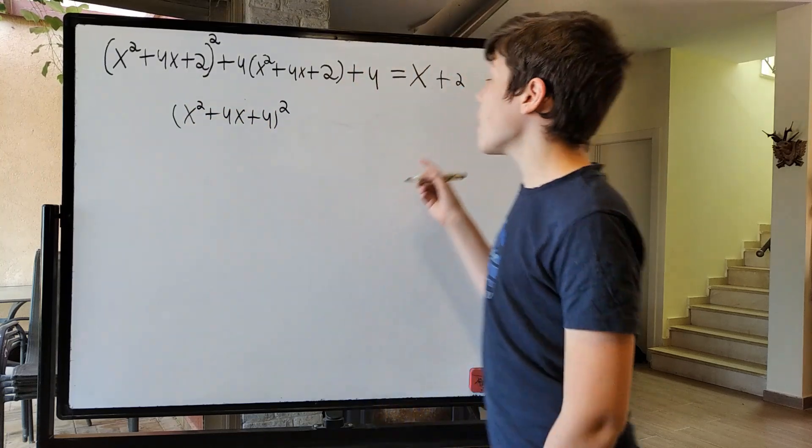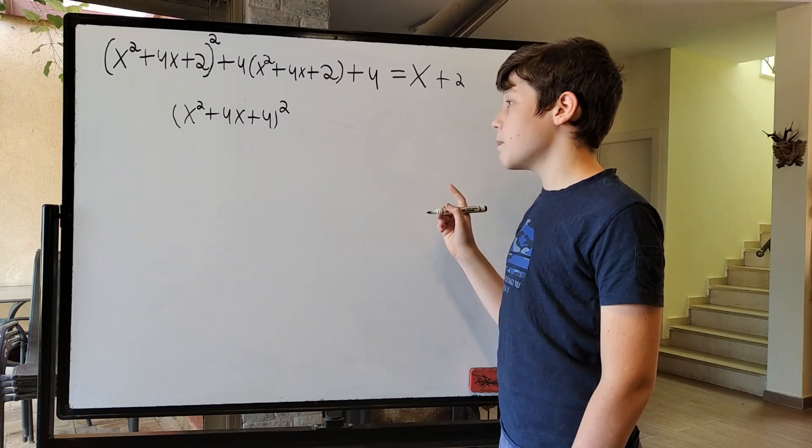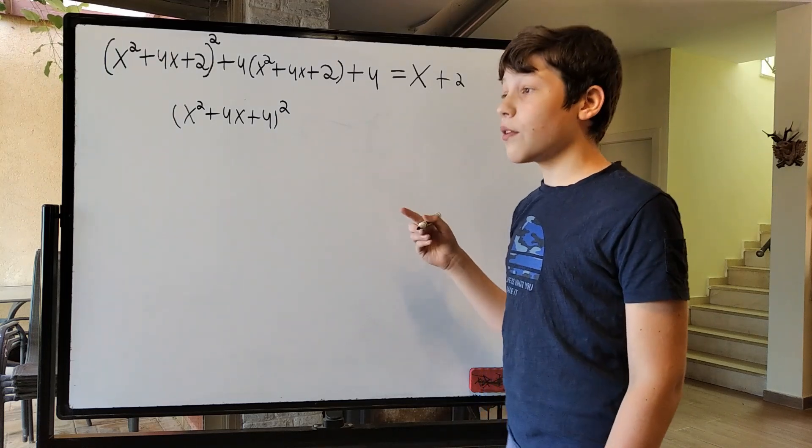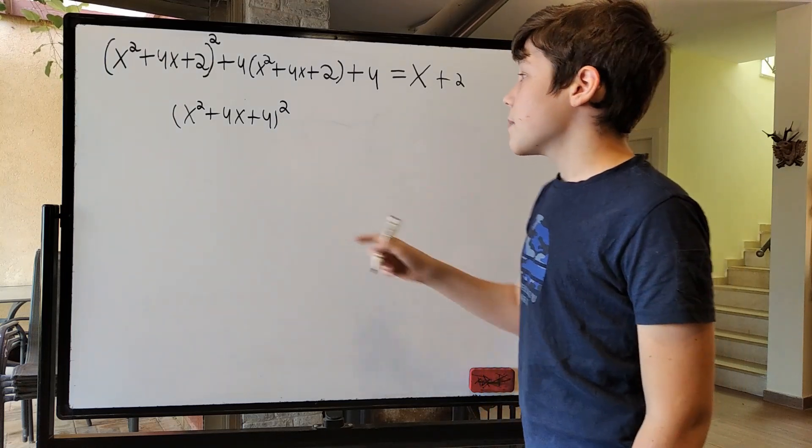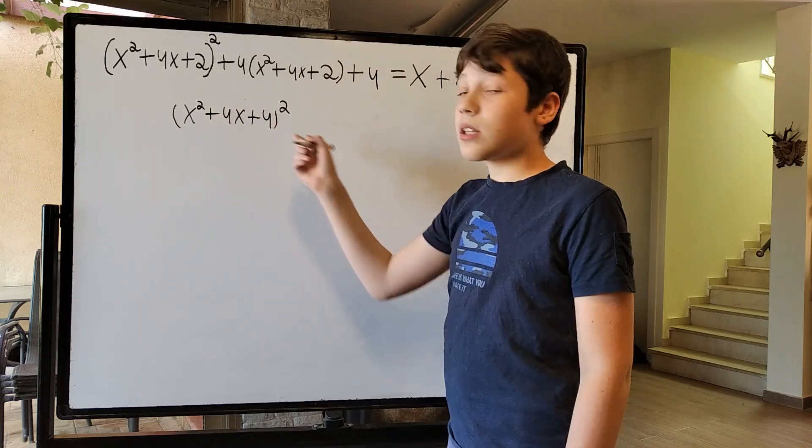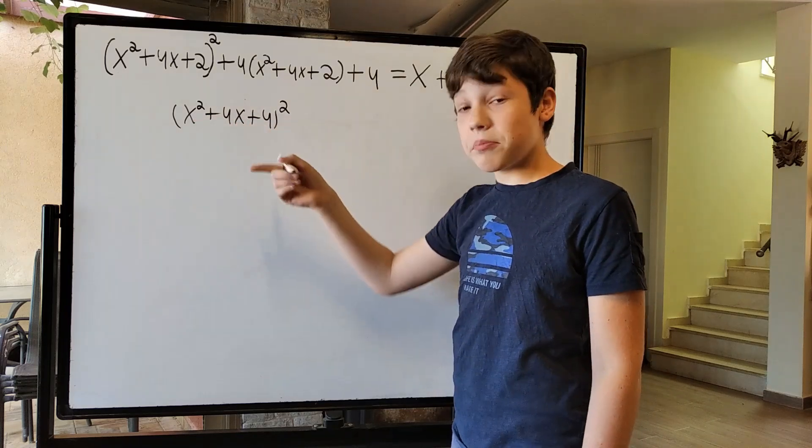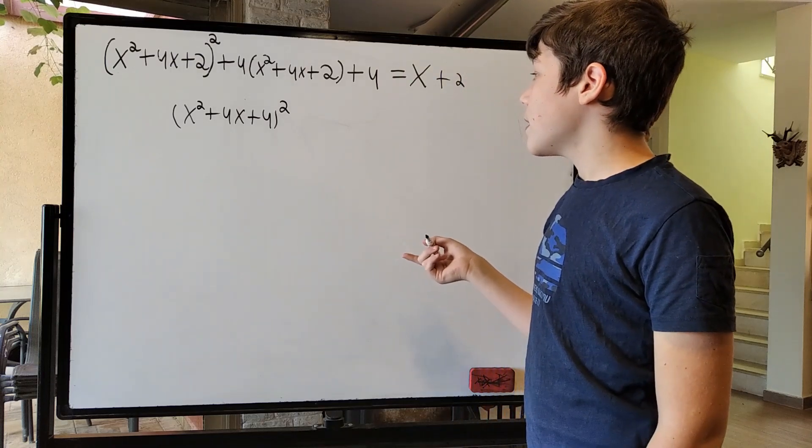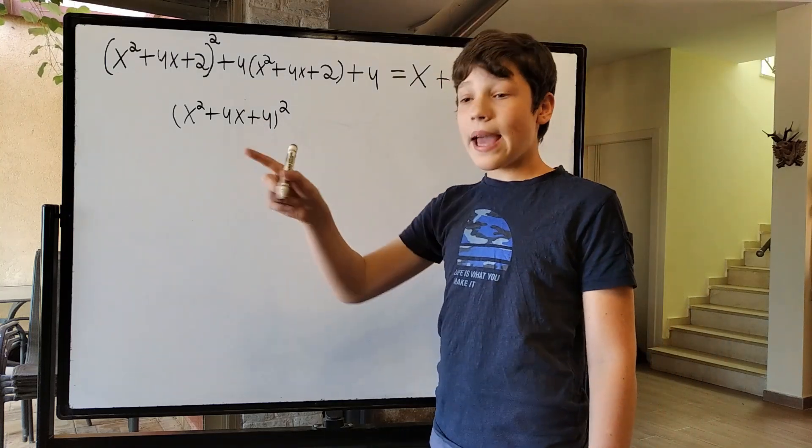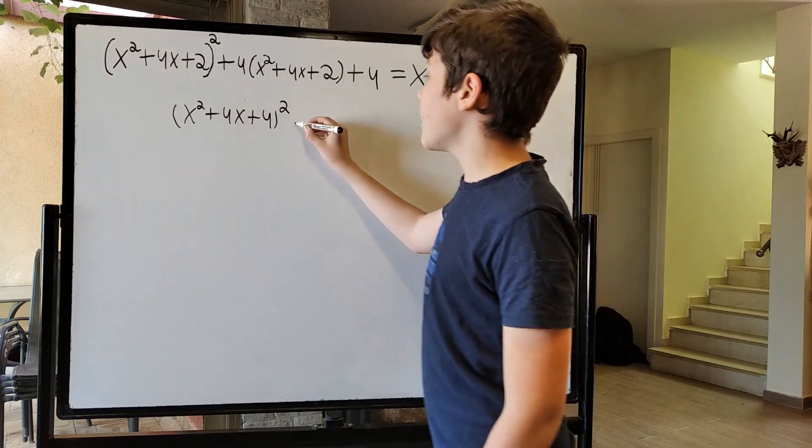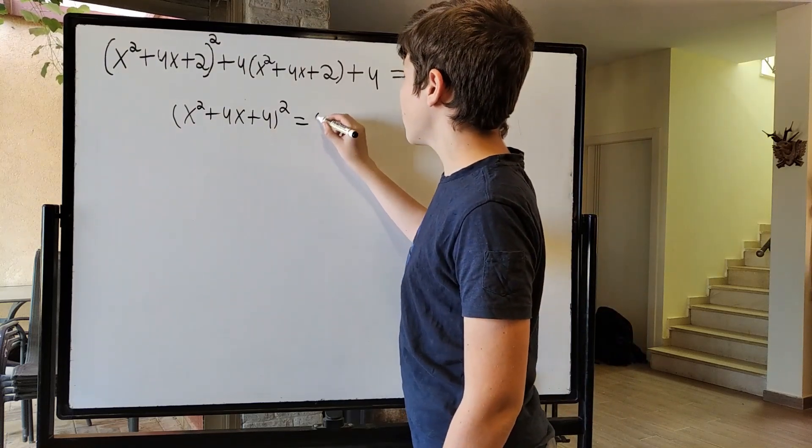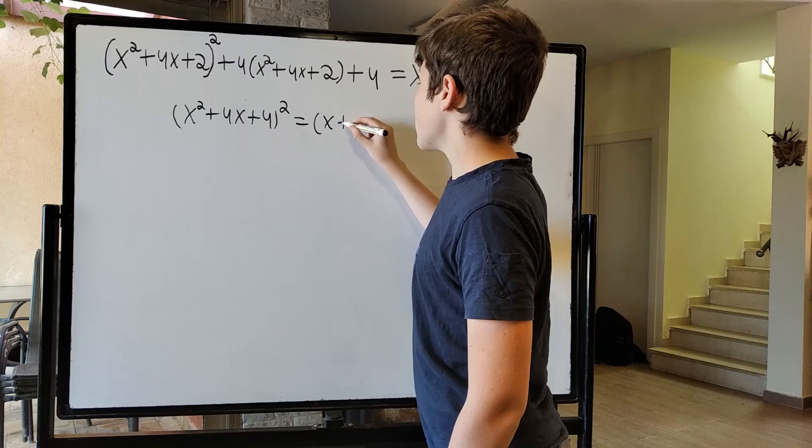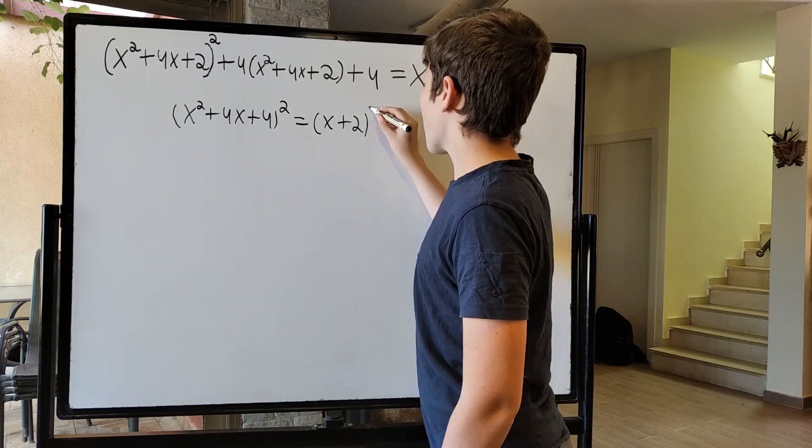But now, before I write that this is x plus 2, you can see that we can further simplify this. Because we just saw this form, this is x plus 2 all squared. And because we're squaring x plus 2 all squared, then we have x plus 2 all to the 4th.